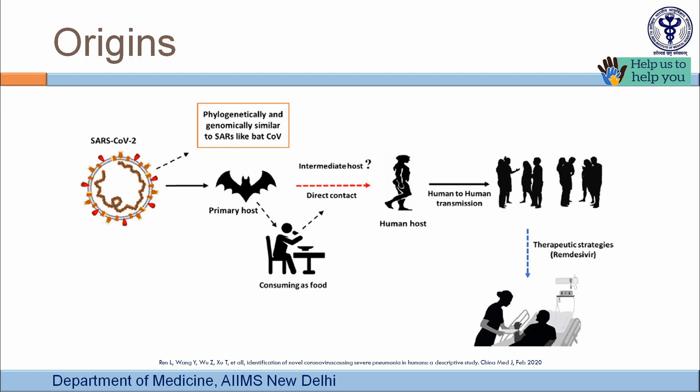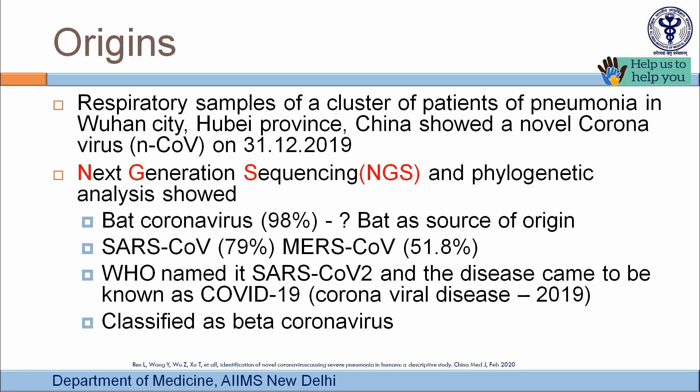The virus can be transmitted directly from bat to humans or through an intermediate source. Once the virus entered the human transmission chain, further spread occurs by human-to-human transmission — predominantly through respiratory droplet nuclei, since the primary site of affection is the lungs.